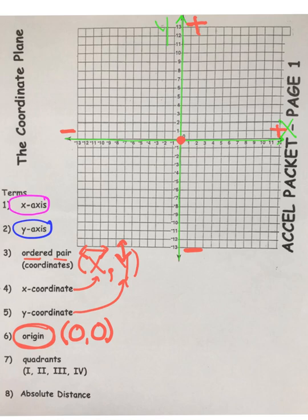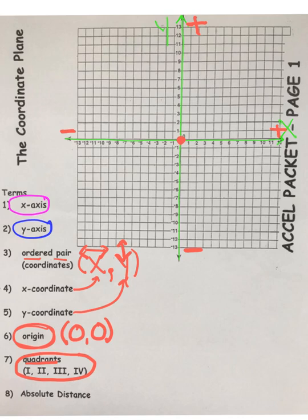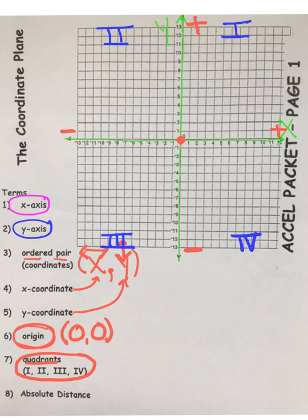Now just a few more things before we start plotting our first points. Your coordinate plane is broken into quadrants — four parts. We label those four parts with Roman numerals, and when we label them, we move counterclockwise. This first quadrant is called quadrant one. Label it with a Roman numeral. Quadrant two. Quadrant three. And finally, using a Roman numeral, quadrant four. It's tradition.